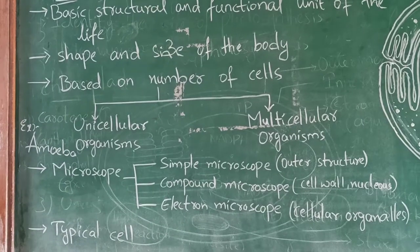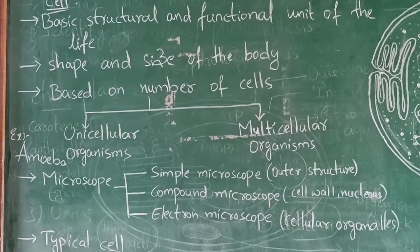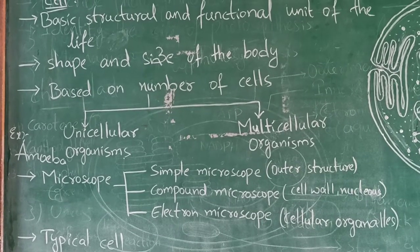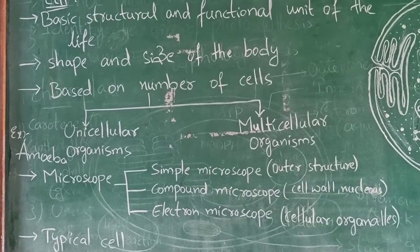Next, multicellular organisms. Multicellular organisms is having different number of cell organelles for carrying out different metabolic activities. For example, human beings.